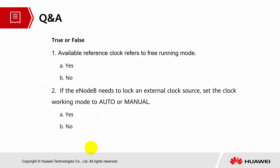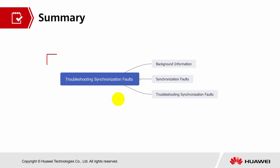Q&A session: Question one — does 'available reference clock' refer to free running mode? The answer is no. Question two — if the eNodeB needs to lock an external clock source, should the clock working mode be set to auto or manual? The answer is yes. In summary, this part on troubleshooting synchronization faults covered background information on clock synchronization, the types of synchronization faults, and the steps to troubleshoot them. That's all — hope you enjoyed the session. Thank you and bye.